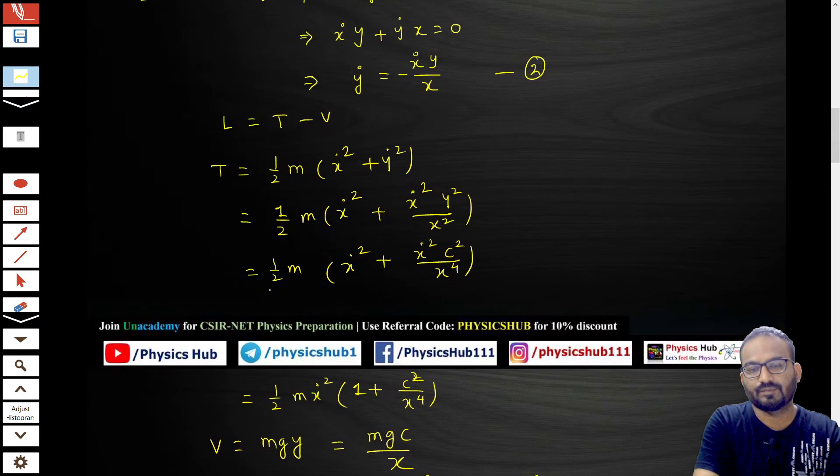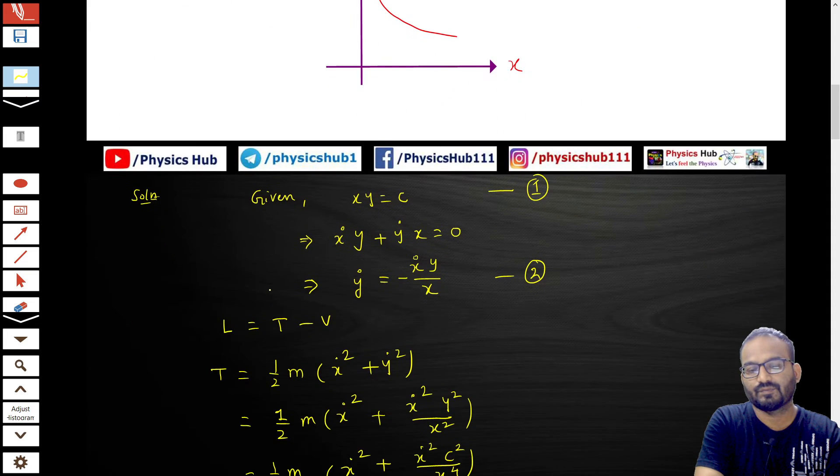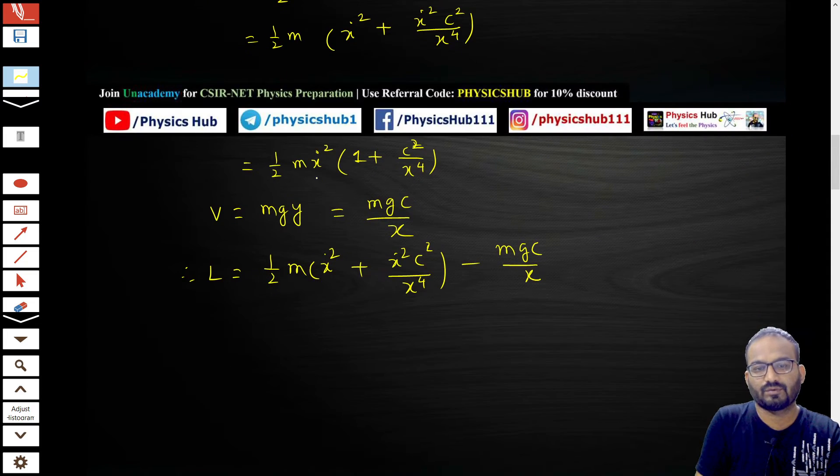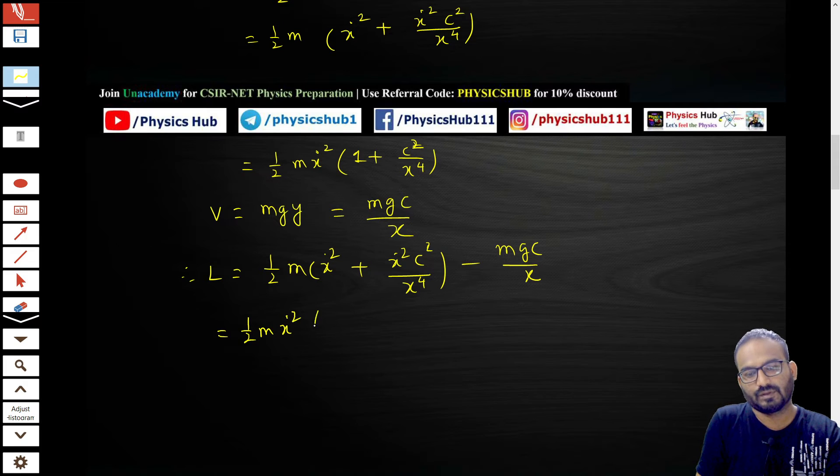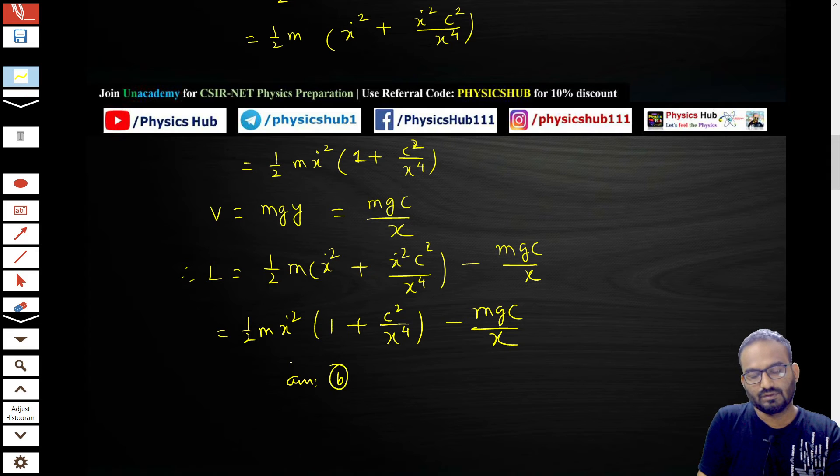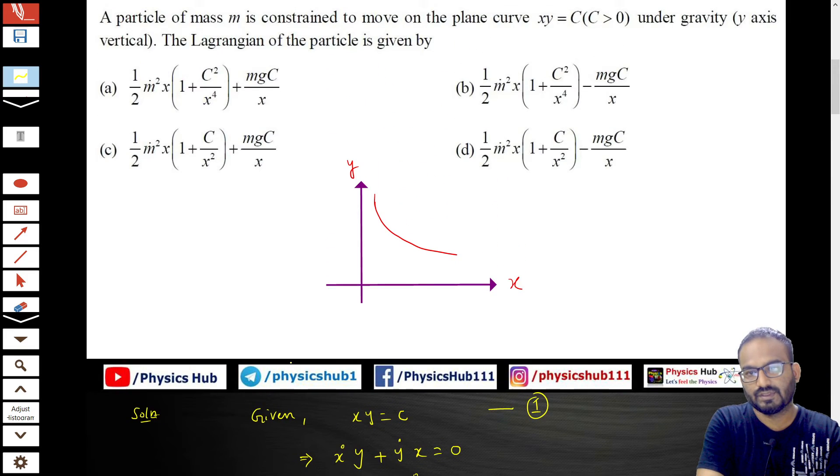Option b is the correct option. Okay, option b, because we have to put this value: half m·x-dot²(1 + c²/x⁴) - mgc/x, which is matching with option b. I think you have understood how to do this problem.